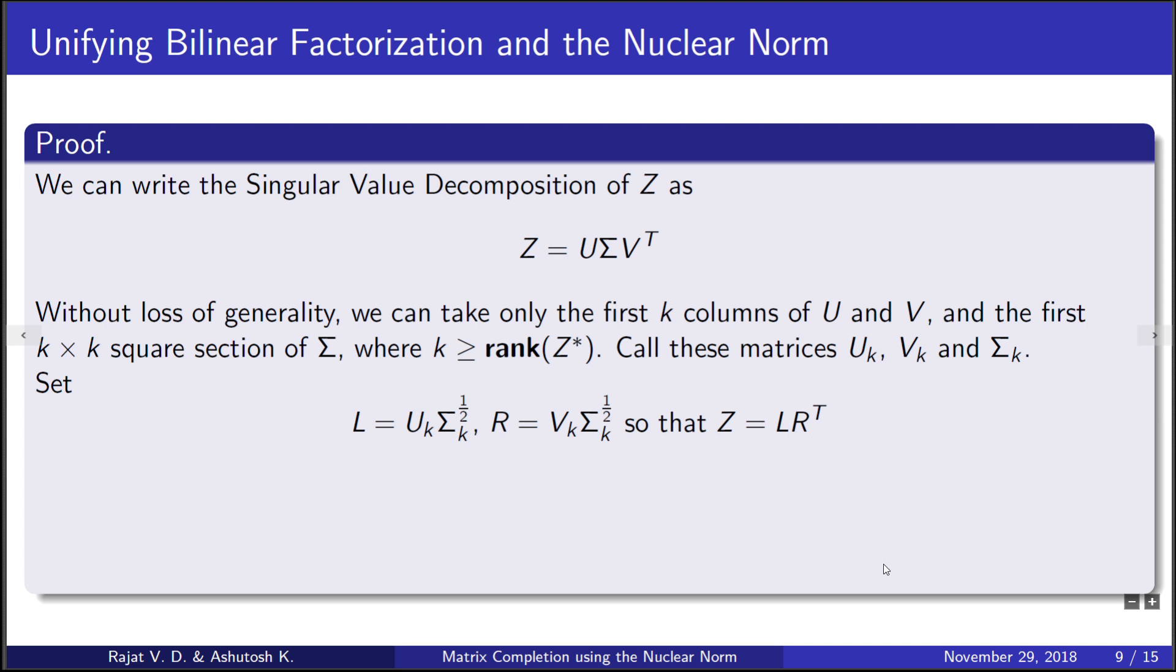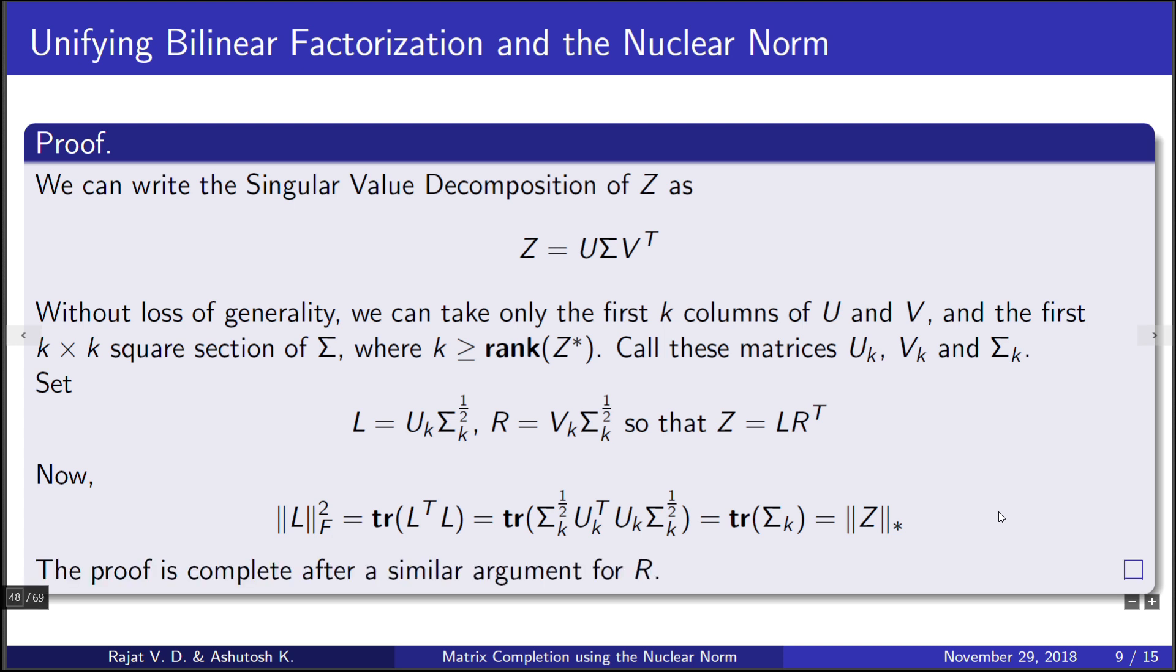Considering the Frobenius norm of L can be represented as trace of L transpose L. Substituting the expression above, we get this. Since U_k is an orthogonal matrix, U_k transpose U_k is an identity, and the expression simplifies to trace of Sigma_k, which is the sum of singular values, which is the nuclear norm of Z. We can argue along similar lines for matrix R, and this completes the proof.